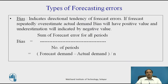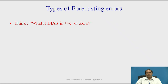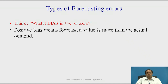Now, what are the various types of forecasting errors? The first and very simple preliminary error is called bias. Bias indicates the directional tendency of the forecasting error. If the forecast repeatedly overestimates actual demand, bias will have a positive value; underestimation is indicated by a negative value. Bias = sum of forecasting period errors for all periods divided by number of periods, that is (forecasted demand − actual demand) / n.